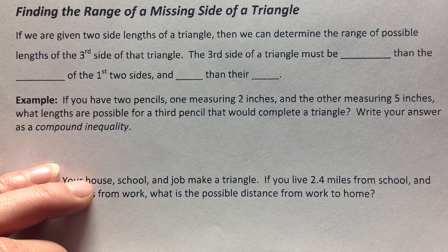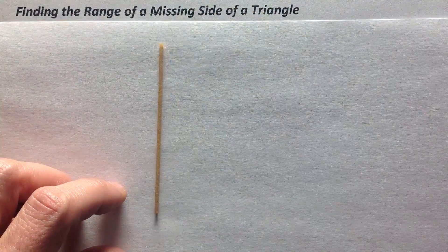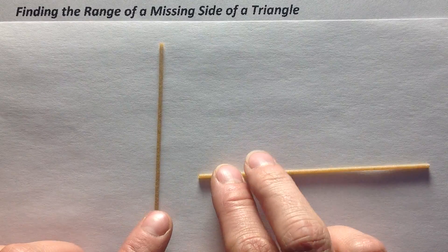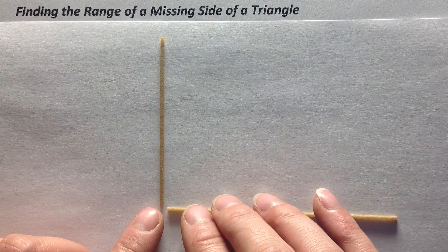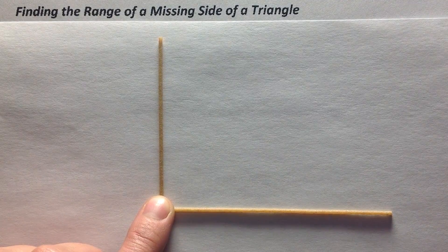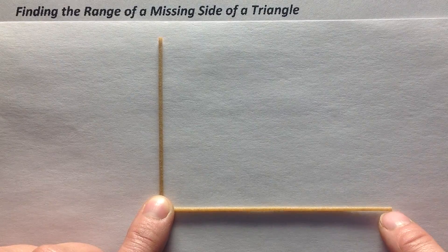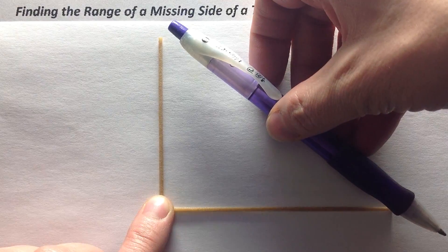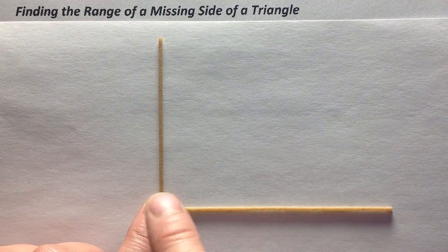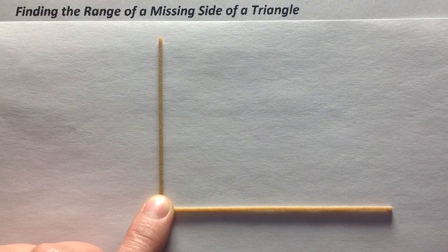Let's talk about how to find the third side of a triangle if we know two of the lengths. I'm going to use my noodles here to look at an example. This one measures three inches and this one measures four inches. Now if we knew that this was a right triangle — a triangle that has a 90-degree angle — and these were the two legs, there is only one possible length for the third side. If that's fixed at 90 degrees, you're going to use the Pythagorean Theorem and you will have one answer.